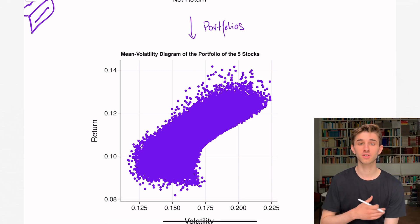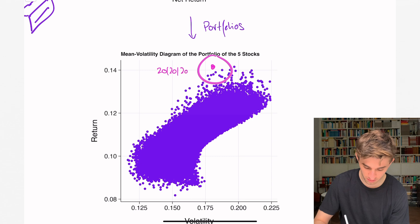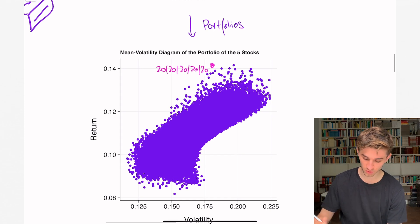In this diagram, I randomly made 10,000 portfolios out of five stocks. Every single data point is one possible portfolio. For instance, this data point could be a portfolio: 20% stock one, 20% stock two, 20% stock three, 20% stock four, and 20% stock five. And this portfolio has a certain return and volatility associated with it.